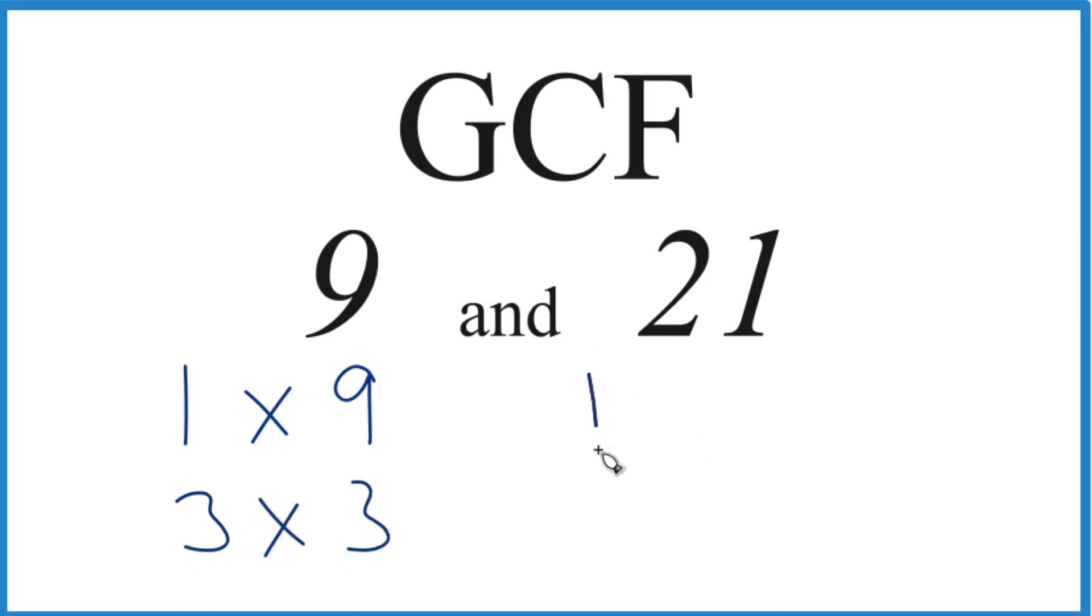For 21, one times 21, that equals 21. Three times seven, and that's it. Those are the factors for 21.